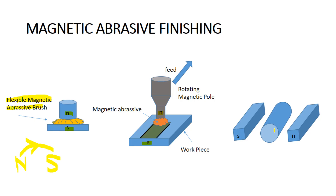For a cylindrical workpiece, a north pole is placed on one side and a south pole on the other, creating magnetic field lines across it. Abrasive material — a ferromagnetic substance combined with abrasive particles — is suspended here. The ferromagnetic particles align with the magnetic field, helping the abrasive particles align on both sides of the workpiece. When the workpiece is rotated, machining takes place on its outer surface.